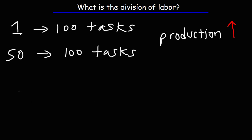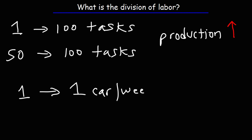To illustrate: one person might be able to build one car per week. Imagine getting the parts, installing the radiator, installing the engine, the transmission, the tires, the steering wheel, and everything else necessary to put together a car — it might take a whole week. If we use the division of labor and divide the tasks among 50 people, that group of 50 might be able to make more than 50 cars a week.